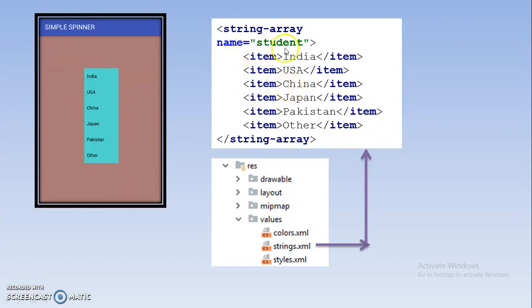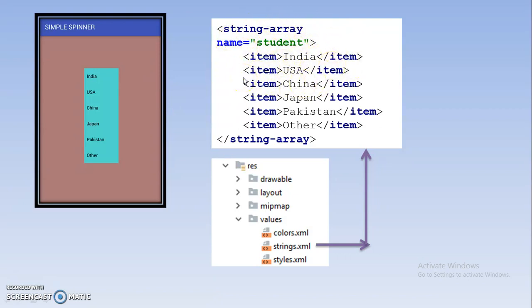After setting up the Spinner XML, you go to the string array to add elements, because a Spinner is nothing but a collection of elements and we need a string array for that. There are two basic ways to add elements: first, by using an XML string array, and second, by using Java where you declare the string array in the activity class. In this tutorial we will see how to add elements through an XML string array, where you write item tags — like India, USA, China — inside the string array tag, then close the string array.